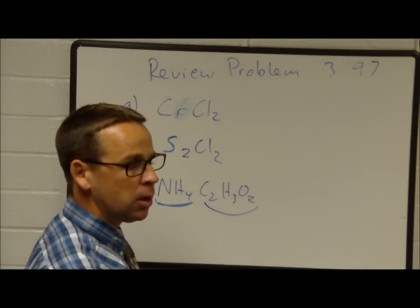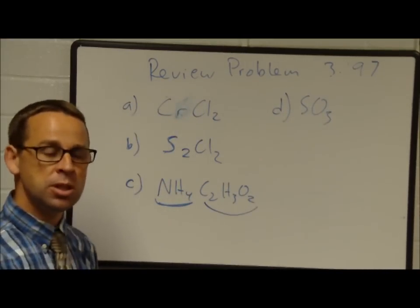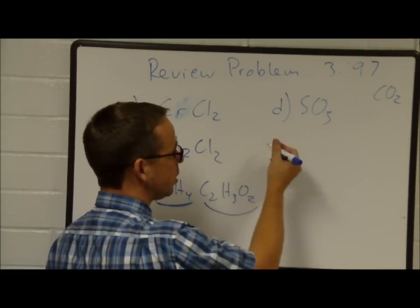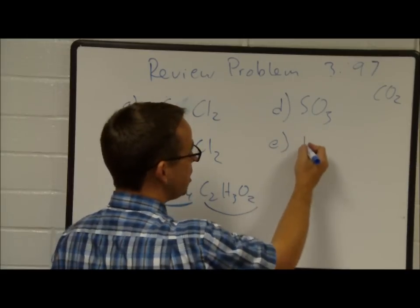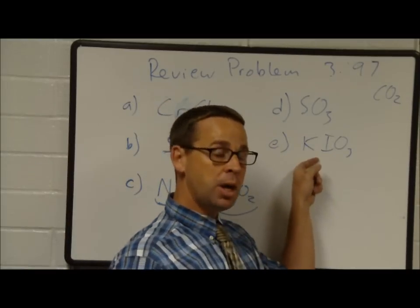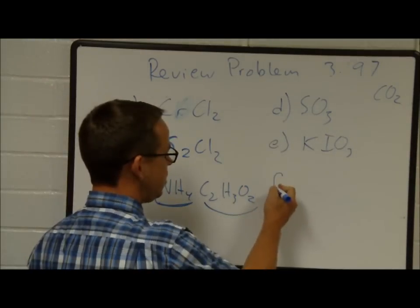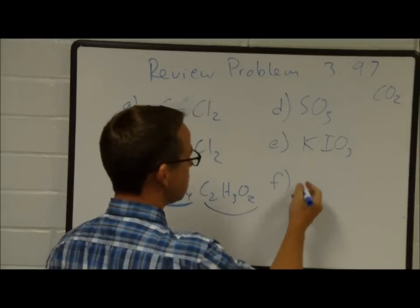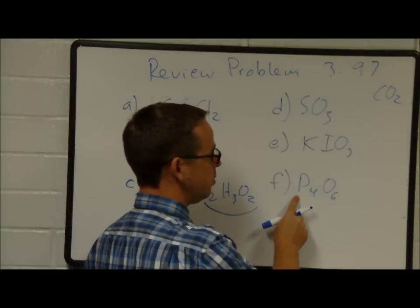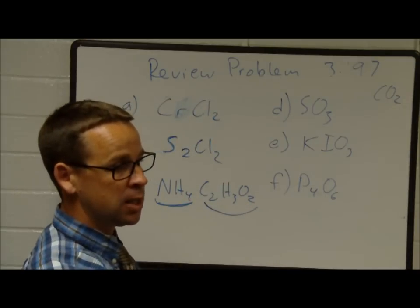SO₃: two nonmetals, so we use the di-tri naming system — sulfur trioxide, a molecular compound. E: KIO₃ — potassium is a metal making this ionic; IO₃⁻ is the iodate ion, so this is potassium iodate. F: P₄O₆ — both nonmetals, molecular compound. Tetraphosphorus hexaoxide.